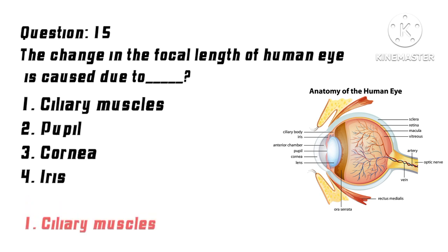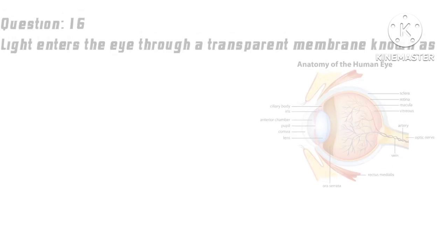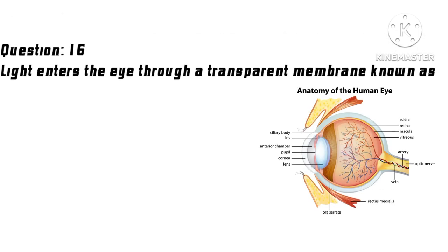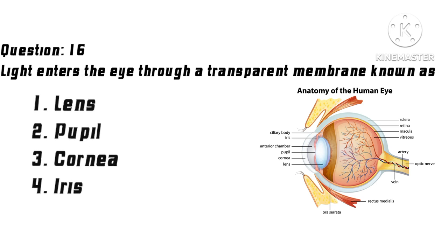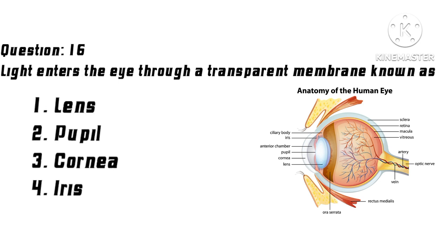Question 15: The change in the focal length of the human eye is caused due to? Options: 1. Ciliary muscles, 2. Pupil, 3. Cornea, 4. Iris. Correct answer: 1. Ciliary muscles.